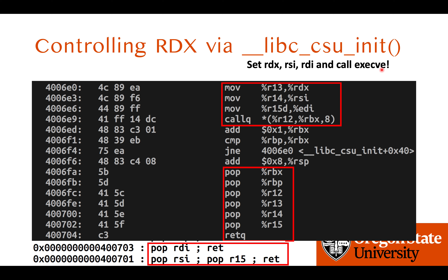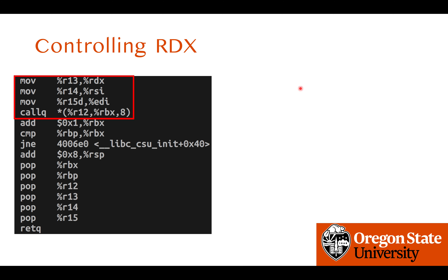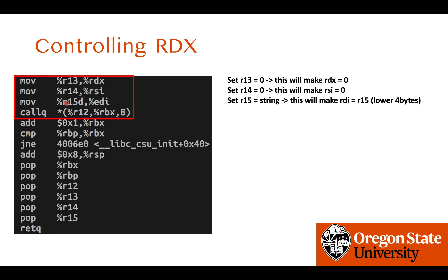Focusing on the top part again: it sets r13 to rdx, so setting r13 as zero makes rdx zero. Setting r14 as zero makes rsi zero. It sets r15d (lower 32 bits of r15) to edi (lower 32 bits of rdi), so if we previously set r15 and rdi to the same value using pop r15 and pop rdi, this instruction does nothing — we can preset all these values to nullify the effect of this instruction.